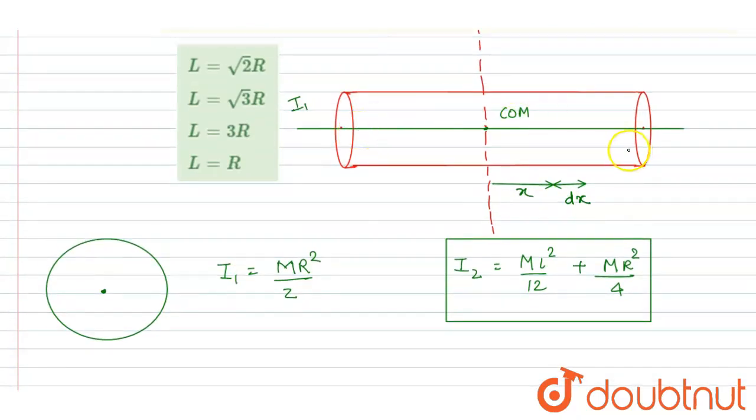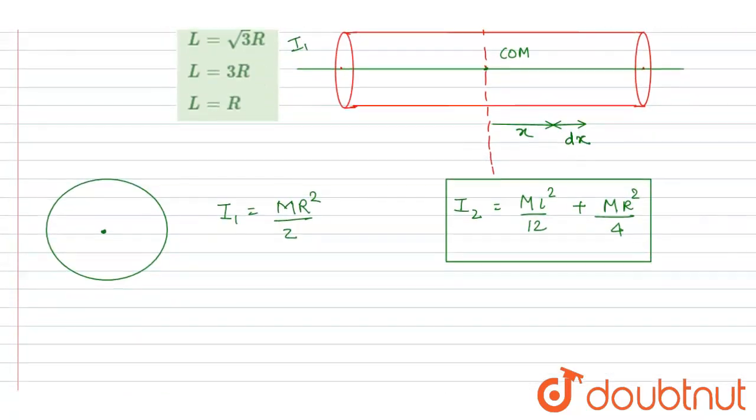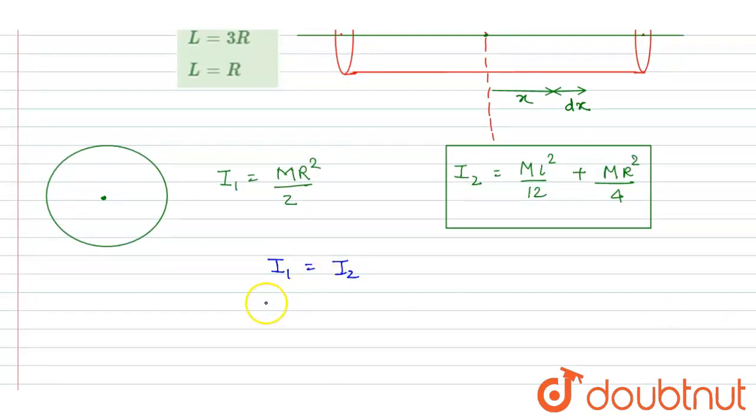Now equate them: I₁ equals I₂. So I will write MR²/2 = MR²/4 + ML²/12.